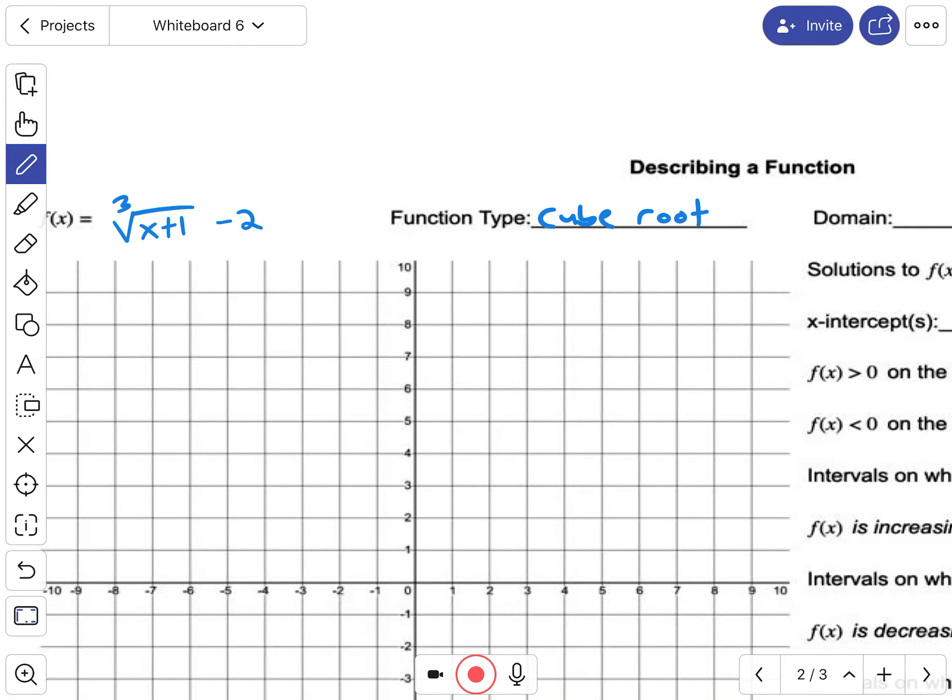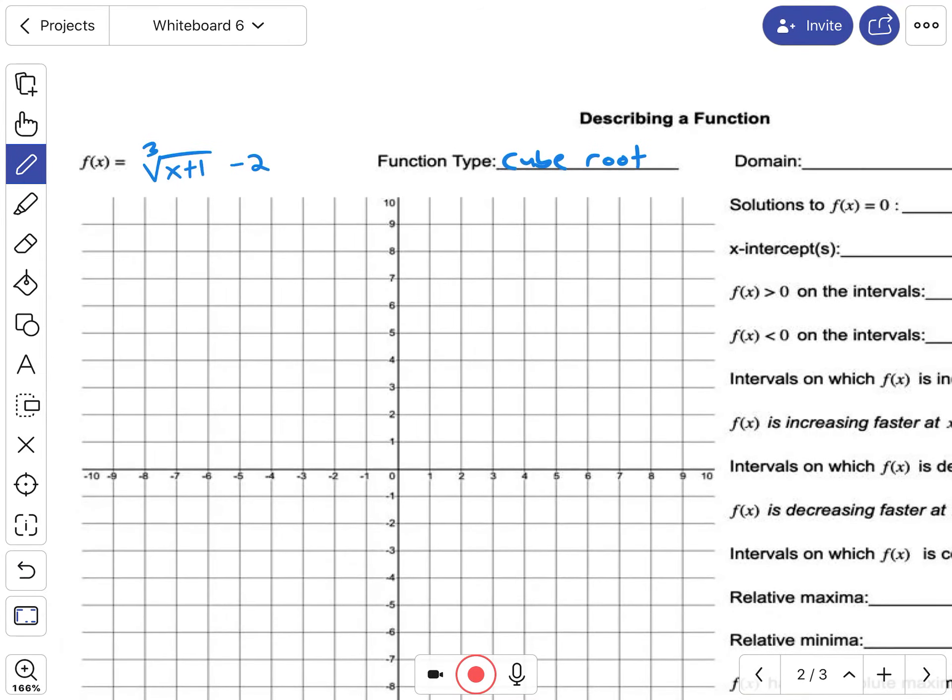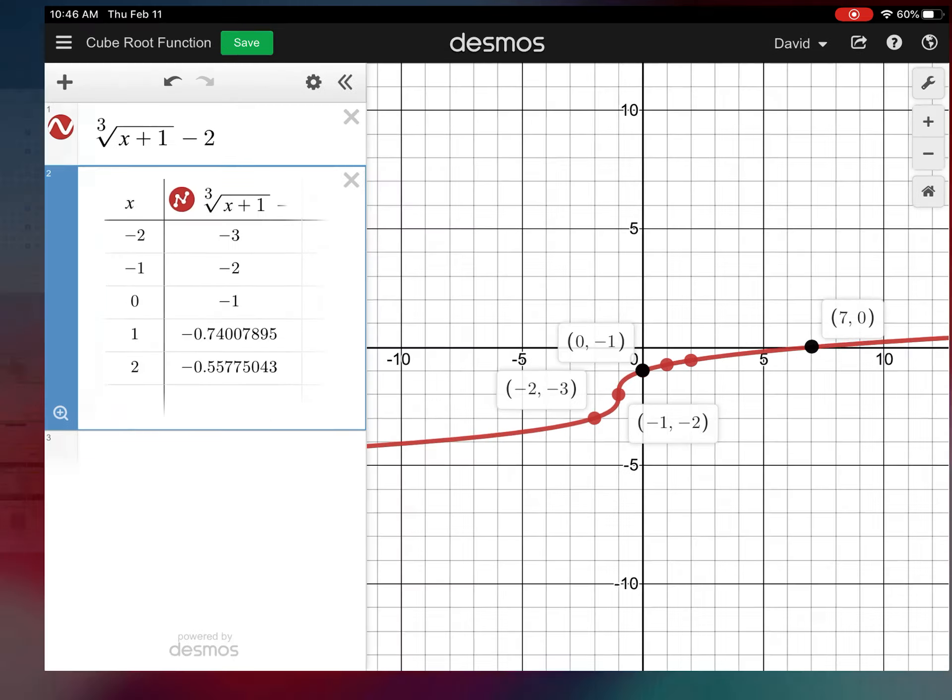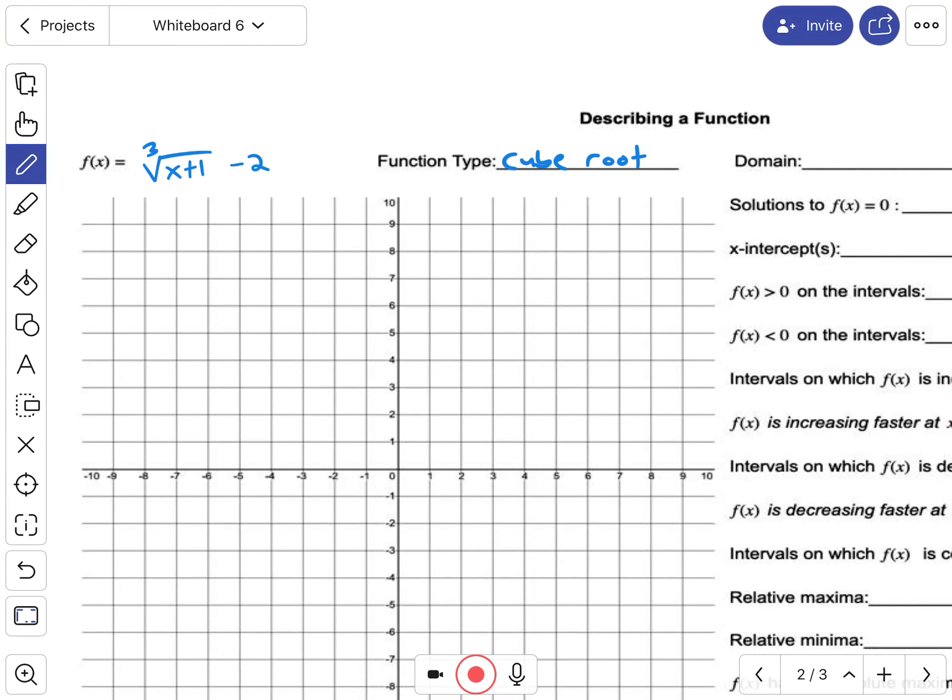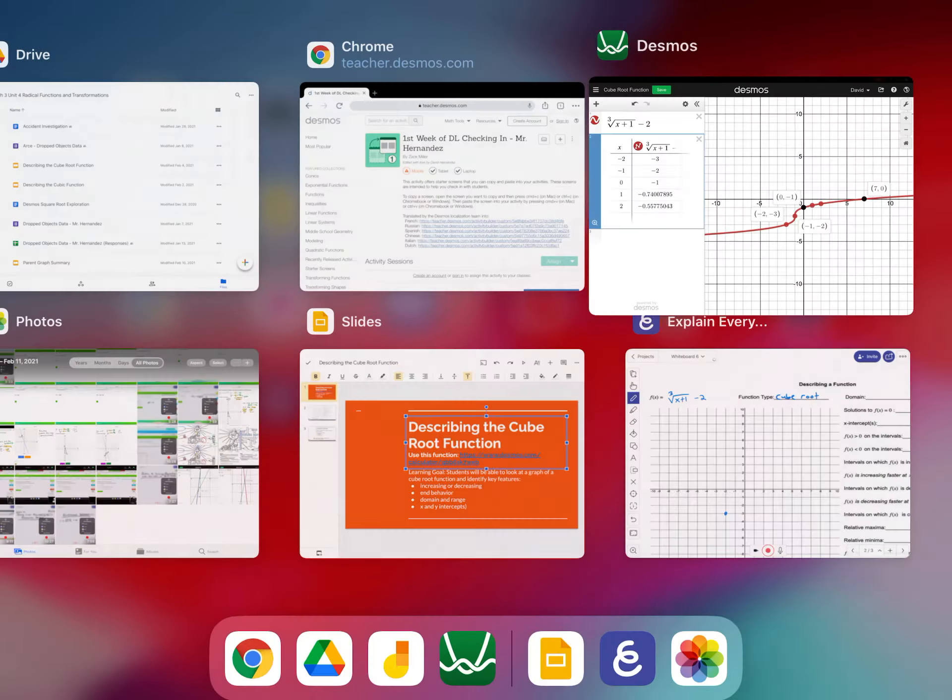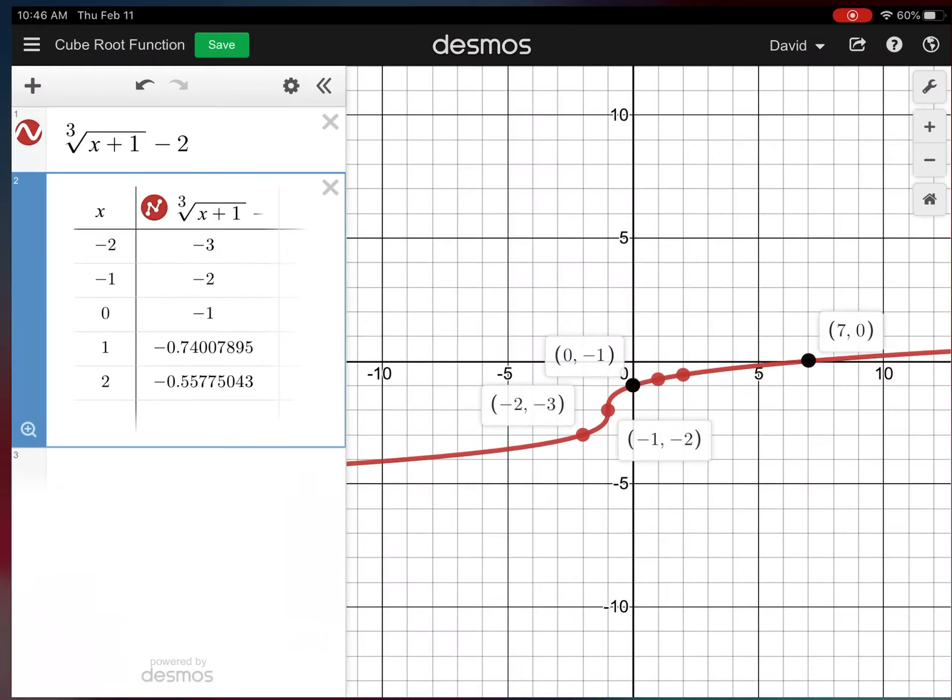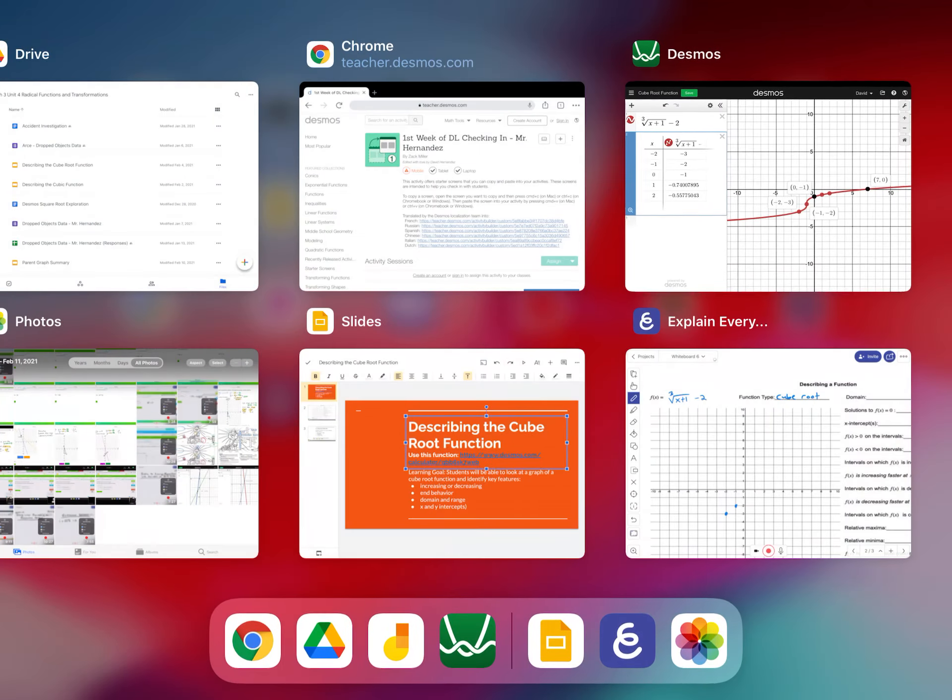Let's graph this thing. So you got negative 2, negative 3: two left, three down. Let's see, negative 1, negative 2: one left, two down. Okay, zero, negative 1.